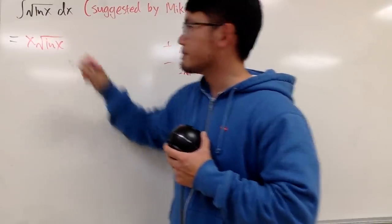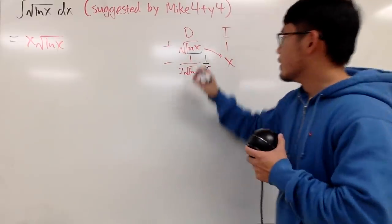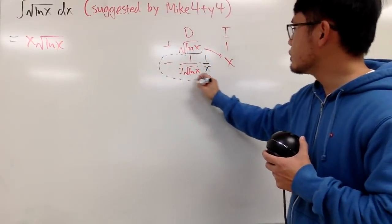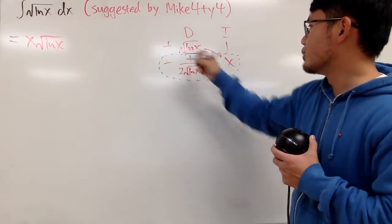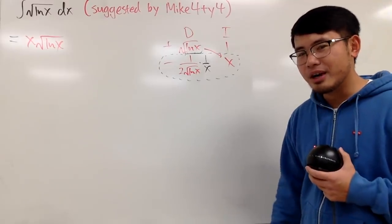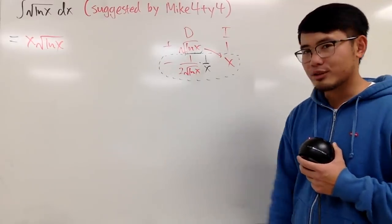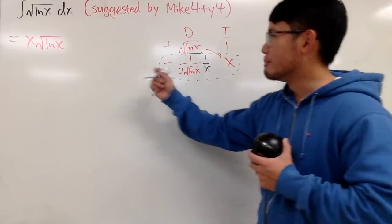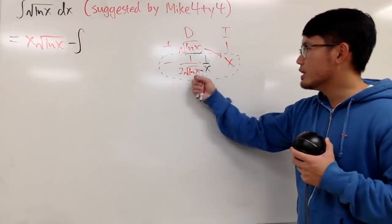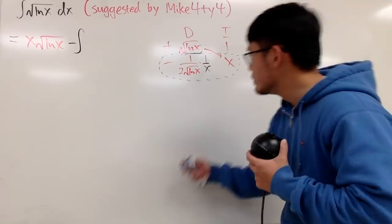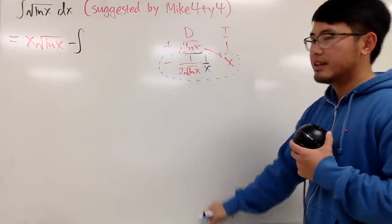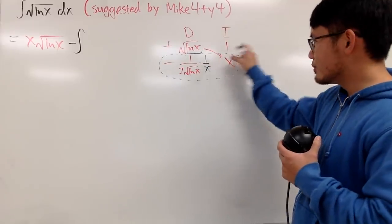And then next, you are going to multiply this row. And this right here is still an integral, along with this sign, don't forget about that. So we have a minus integral, and when you do this times that, of course, you see that 1 over x and then the x cancel each other out.